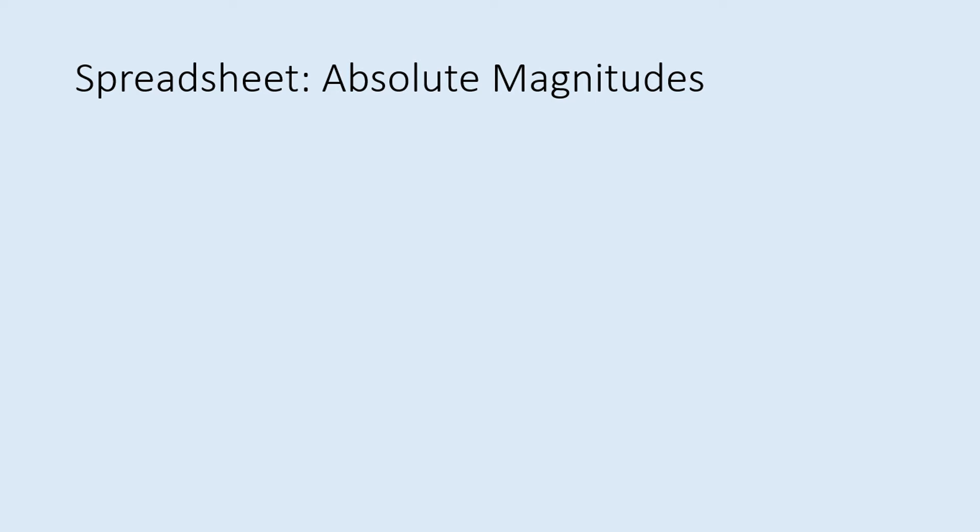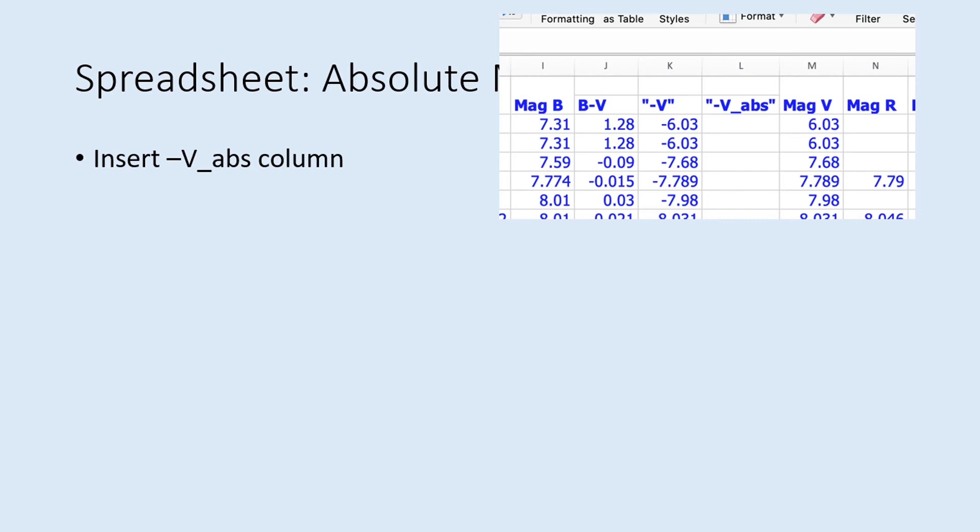The next step is to insert another new column, this one right after minus V mag. We'll call this one minus V abs. This will be for the absolute magnitudes from table 2 in the lab.